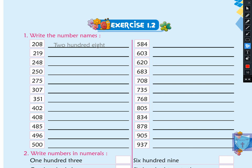In exercise 1.2 there is the first question: write the number names. The first example is already given in your book — 208. It is already written as 208, and now we see how to write the next question.